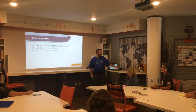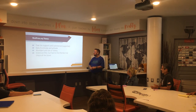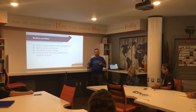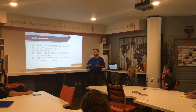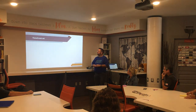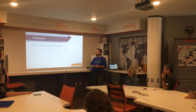WordPress.org has a filtering algorithm that lets you select themes based on certain criteria, but it can be hard to find themes that check all your boxes, so you have to dig through and try a few at a time. Not all of those themes are going to be trustworthy. Automattic does have a vetting system, but occasionally some slip through that have malware or aren't up to standards.